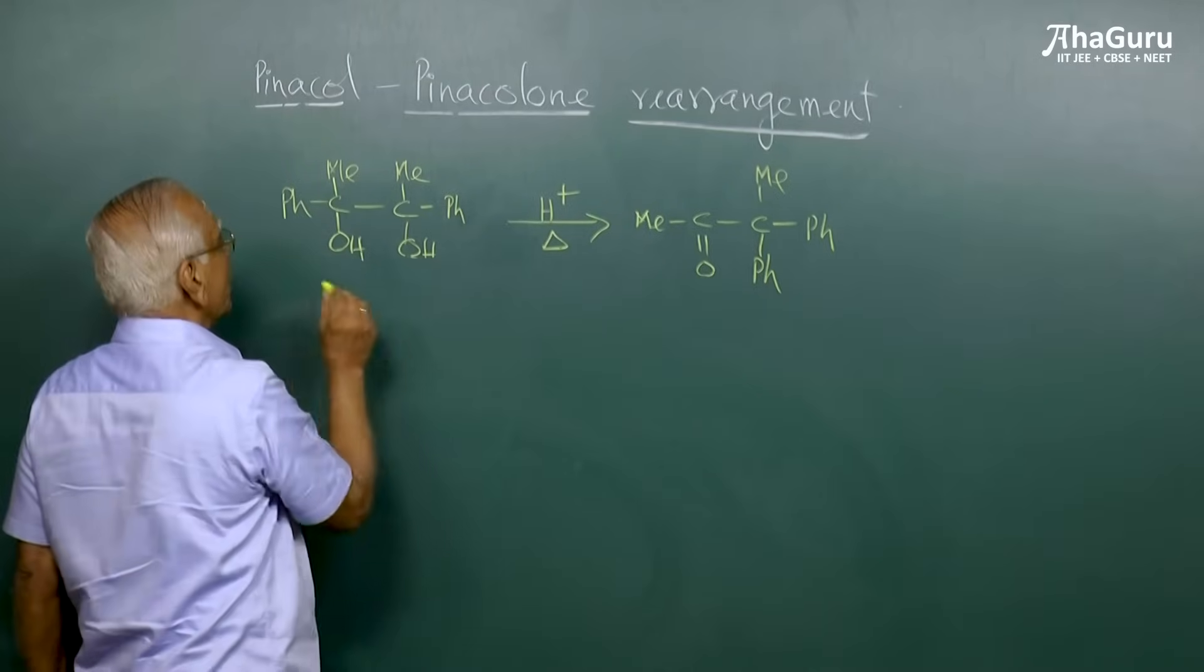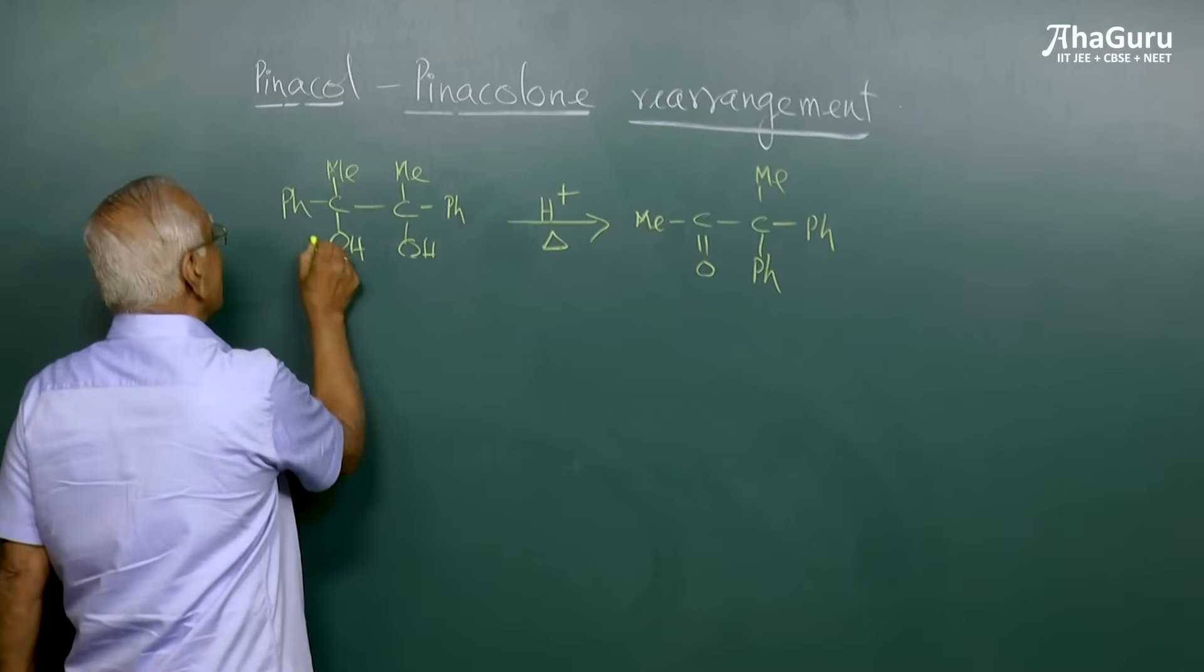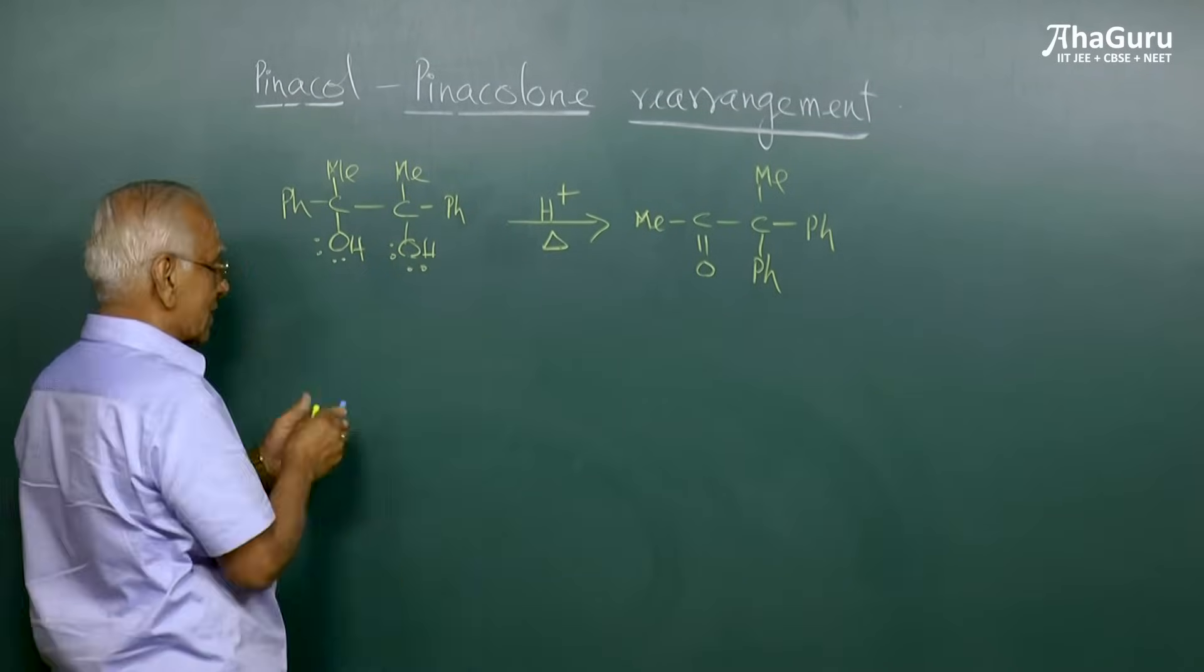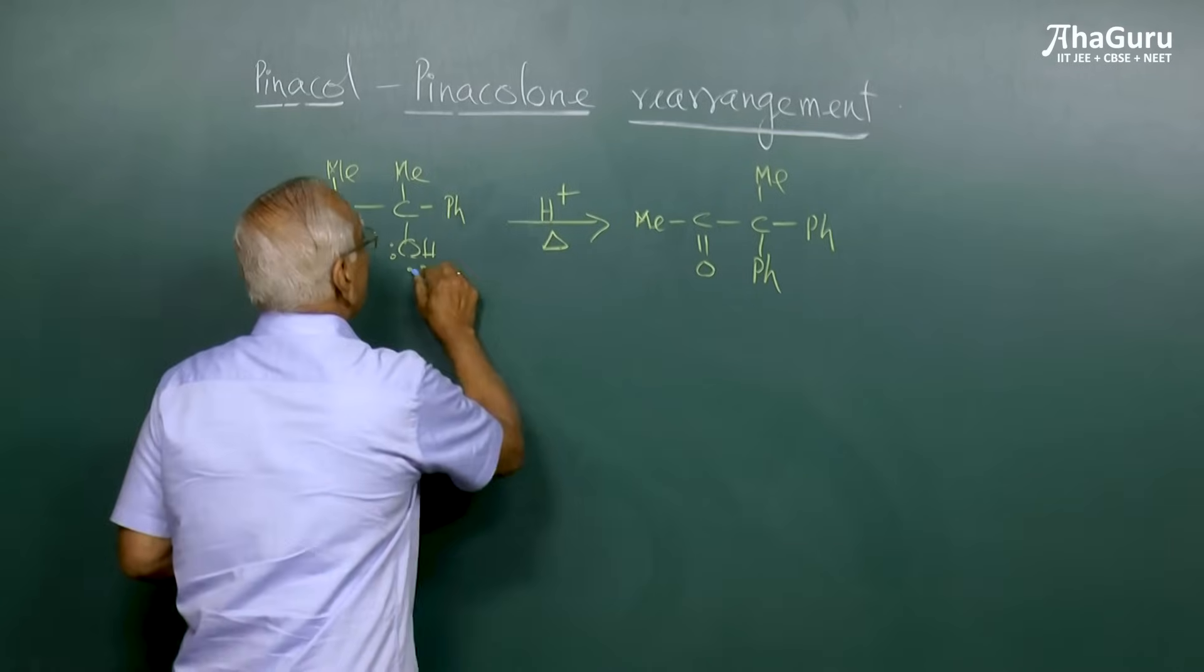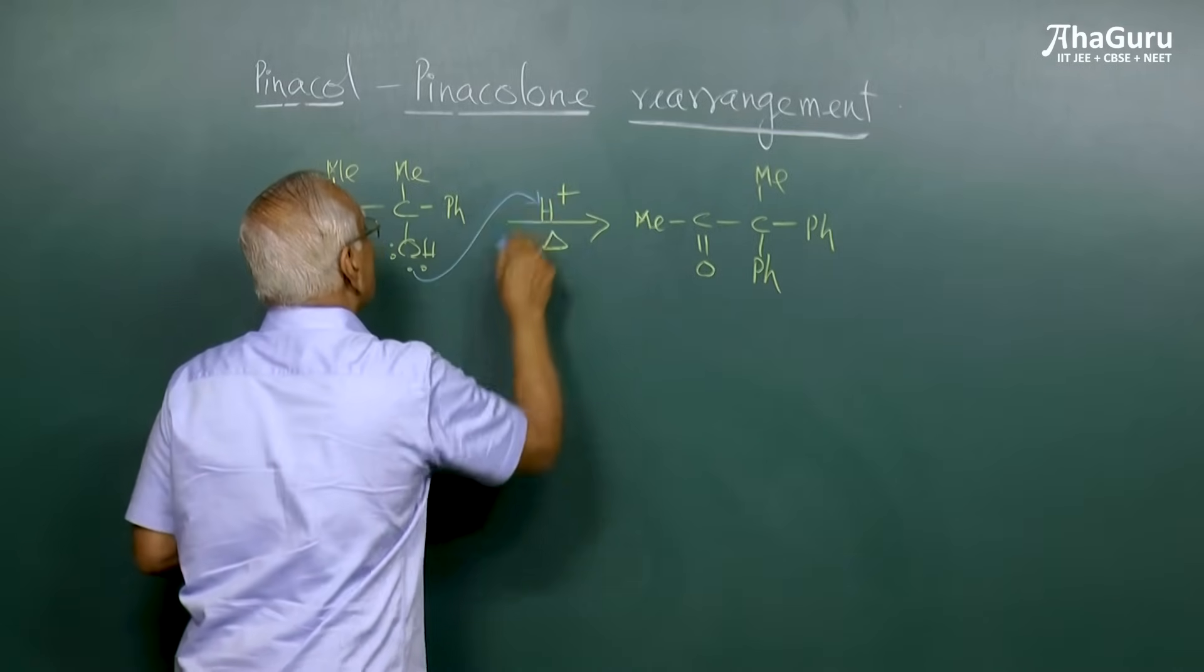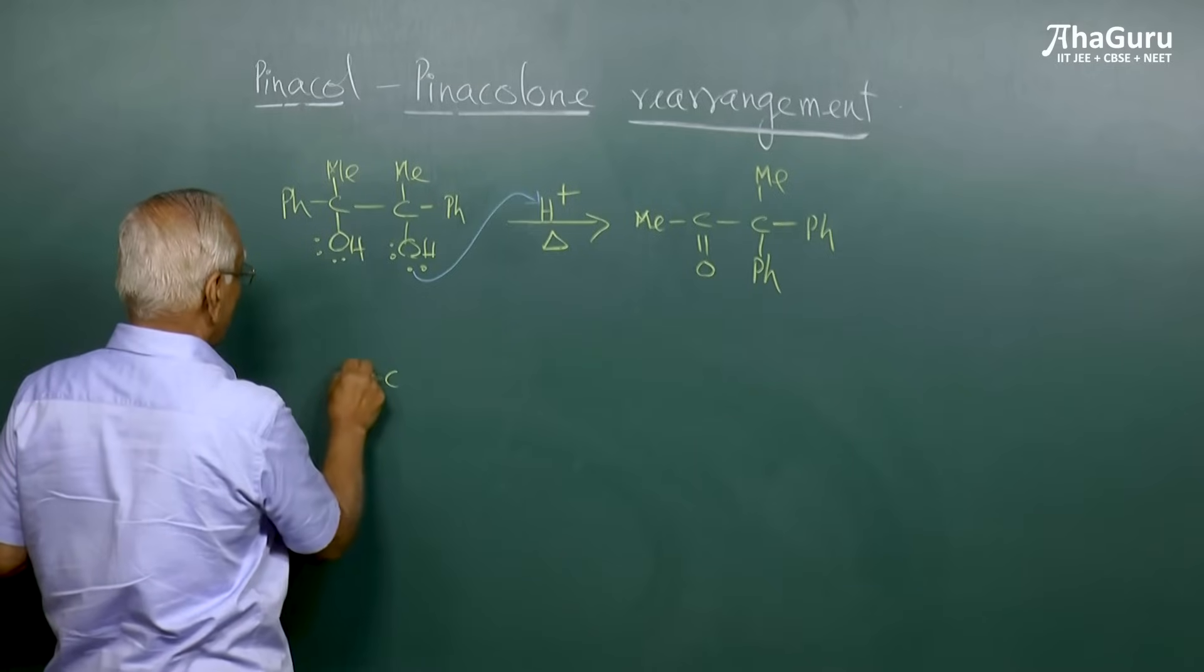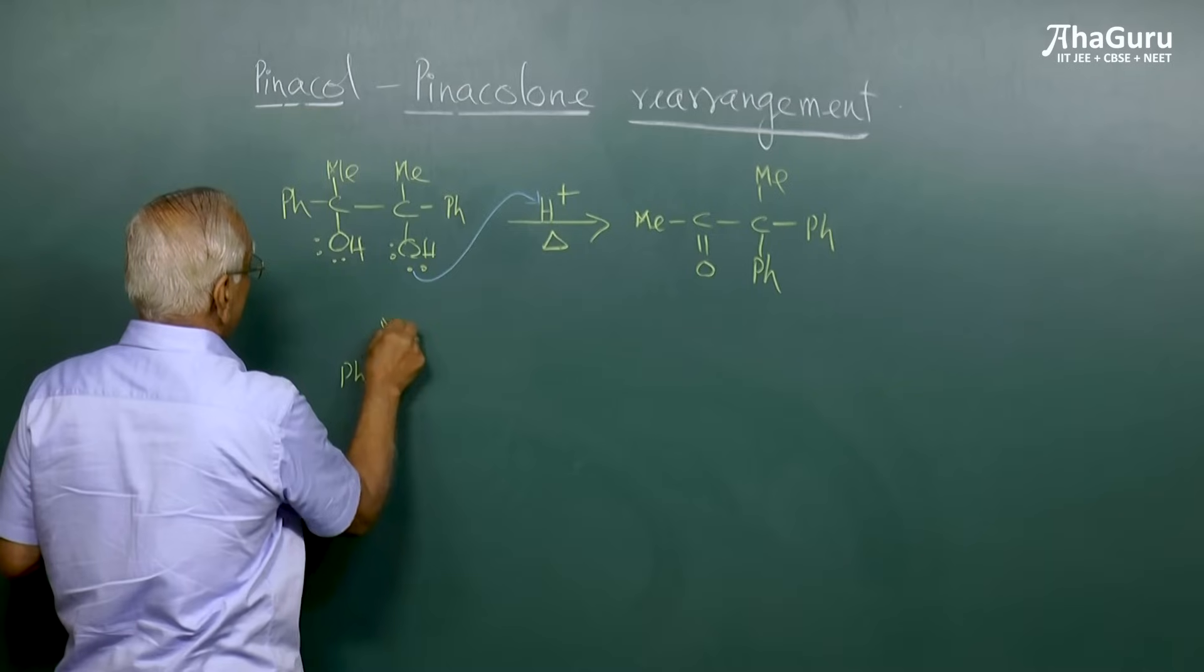This particular molecule has to accept a proton. The only place where it can accept a proton is an OH group, through lone pairs. So one of the lone pairs will accept a proton and it is converted into protonated alcohol.